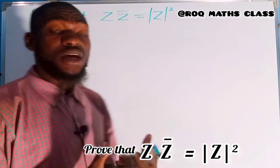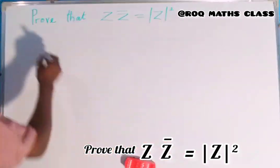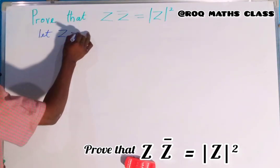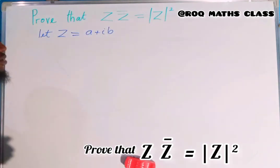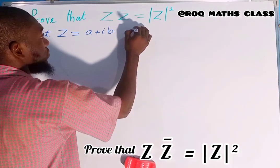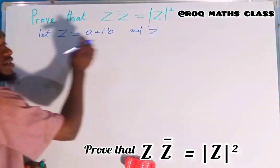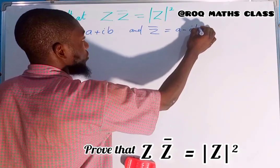Previously we discussed complex numbers. Let our Z be equal to a plus ib, and Z bar, which is the conjugate of Z, is equal to a minus ib.